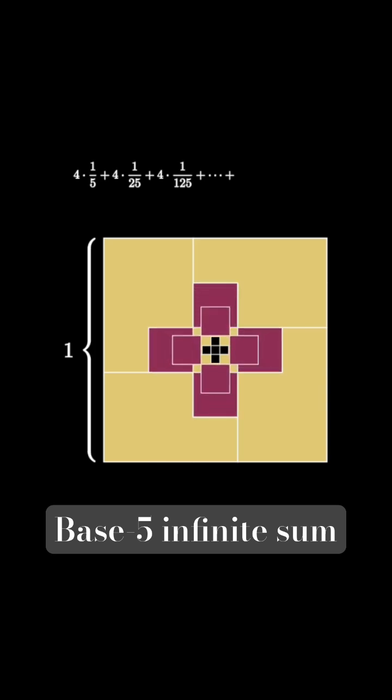And then shading an area of 4 times 1 over 5 to the 4th. If we continue this process indefinitely, we keep shading areas of size 4 times 1 over 5 to the n.